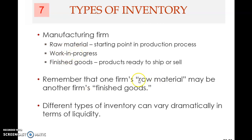One firm's raw material may be another firm's finished goods, so there's no universal definition of raw material. The raw material for one company will be the finished goods of the supplier company. Similarly, your finished goods may be your customer's raw material. Therefore, what counts as raw material and finished goods depends on the perspective of the firm that is selling or using the inventory.